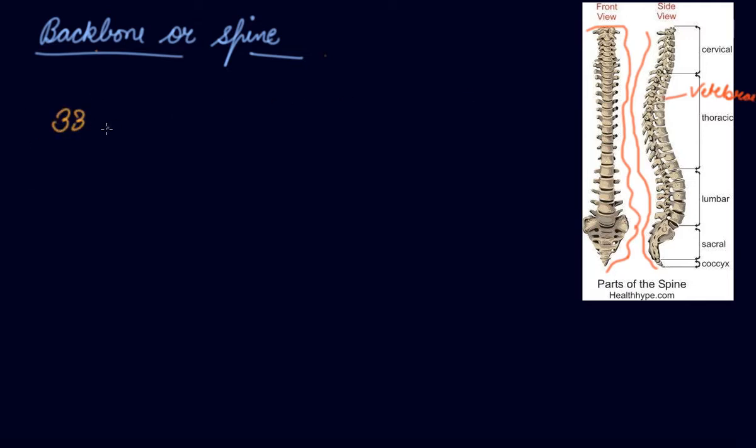Your backbone is made up of 33 small bones called vertebra. The vertebra are joined to each other.